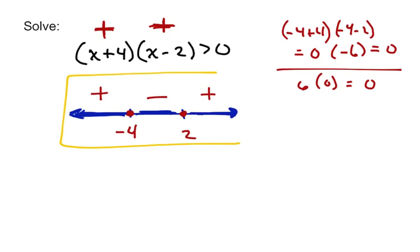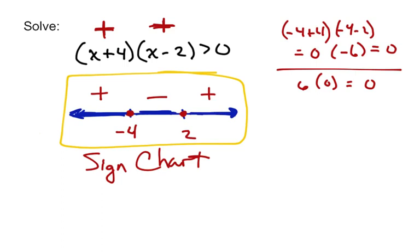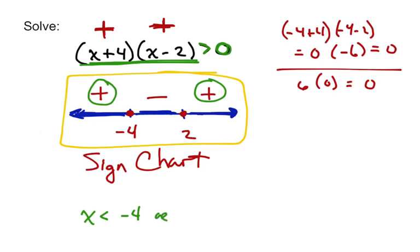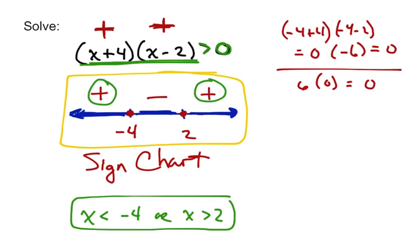This whole picture we've created is called our sign chart, and what it tells us is the sign of the value of the expression on each of these intervals. We can use this sign chart to help us solve the inequality, because I want to know when this expression is greater than 0. Well, positive is greater than 0. So the expression is positive when x is less than negative 4, or when x is greater than 2. That will be our solution to this inequality.